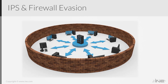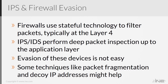We're going to briefly discuss IPS and firewall evasion techniques. Firewalls are stateful devices that filter packets, typically at layers three and four of the OSI stack — meaning IP addresses and port numbers. They use stateful technology to keep track of sessions. IPS and IDS are devices that perform deep packet inspection and are typically behind the firewall, so if something is not caught by the firewall, the IPS or IDS can catch it, because it inspects up to the application layer.